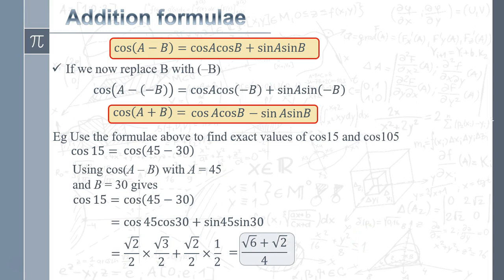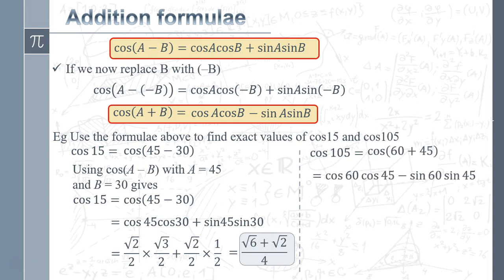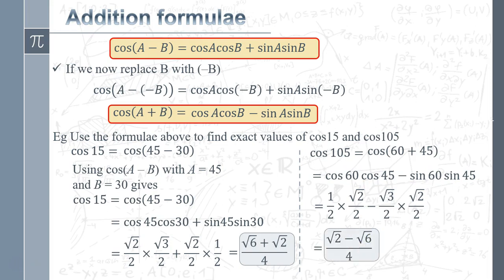You can verify this with a calculator by checking cos 15°. Similarly, for cos 105°, write it as cos(60° + 45°). Substituting: cos 60° = 1/2, sin 60° = √3/2, and using the cos(A + B) formula gives (√2 − √6)/4. So we have exact values for both cos 15° and cos 105°.